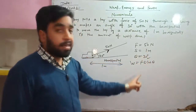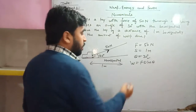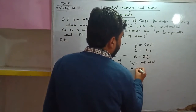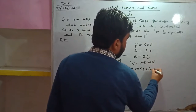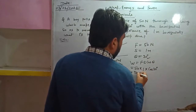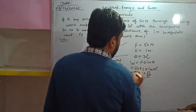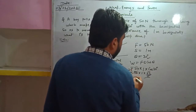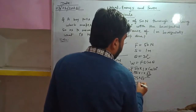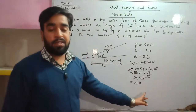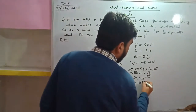Force is in newtons, displacement is in meters, and θ is 30 degrees — all in correct units. So substituting: W = 50 × 1 × cos30°. The value of cos30° is √3/2, so this becomes 50 × 1 × (√3/2) = 25√3.